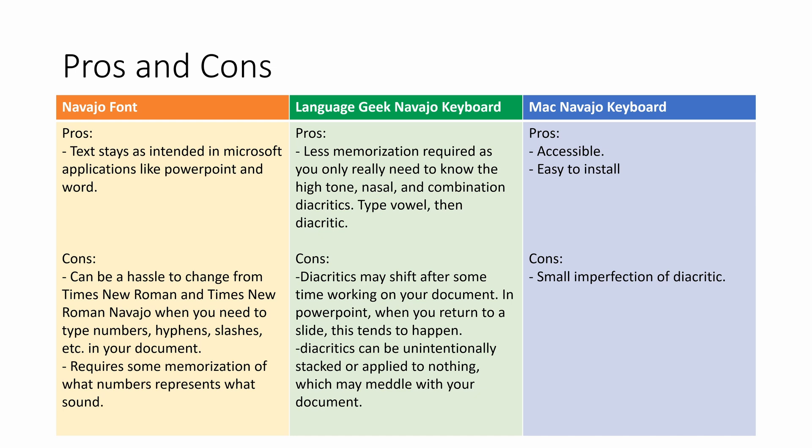For the Language Geek Navajo keyboard, the pros are less memorization — you mainly need to know the high tone, nasal, and combination diacritics, and you type the vowel then the diacritic. The cons are that diacritics may shift after working on a PowerPoint document, and diacritics can be unintentionally stacked or applied to nothing. For example, you might accidentally get two high tones on one letter, or apply a diacritic to empty space. The Mac Navajo keyboard is accessible and easy to install, with only minor diacritic imperfections, but it generally works for what it needs to do.